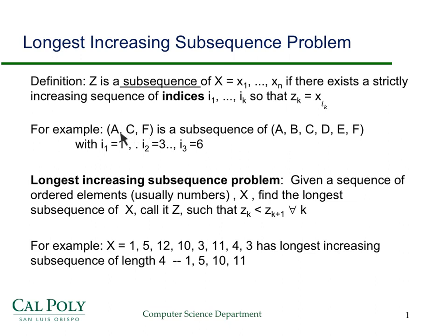For example, ACF is a subsequence of the sequence A, B, C, D, E, F, right? Because you've got A, C, and F. It's a subset of the symbols in the sequence and the order is kept the same as they are in the sequence.